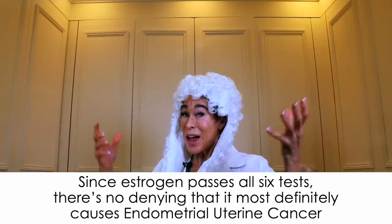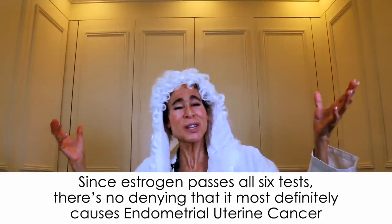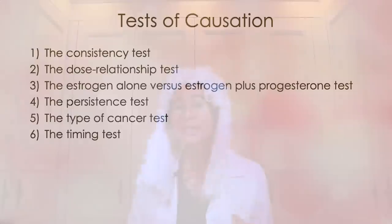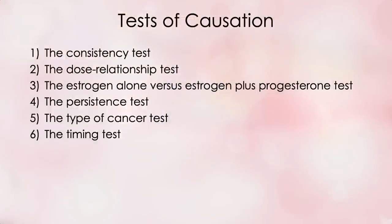If something passes all six of these tests, it is defined as a causative agent. Since estrogen passes all six with flying colors, there is no denying that it most definitely causes endometrial uterine cancer. To recap, the six tests of cause are: the consistency test, the dose relationship test, the estrogen alone versus estrogen plus progesterone test, the persistence test, the type of cancer test, and the timing test. I have met my burden of proof. Case closed.